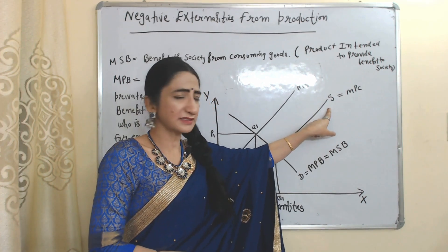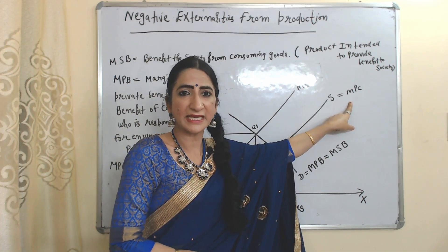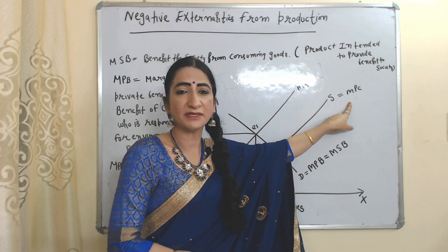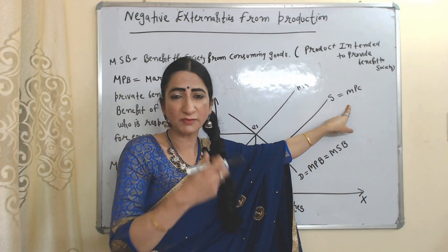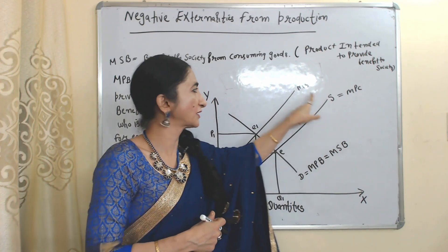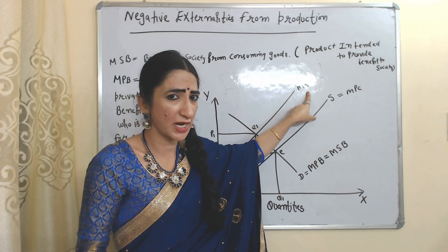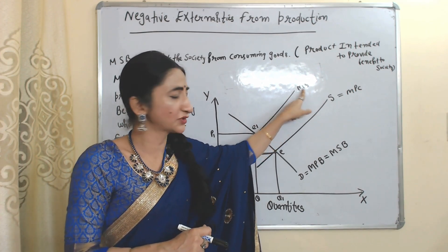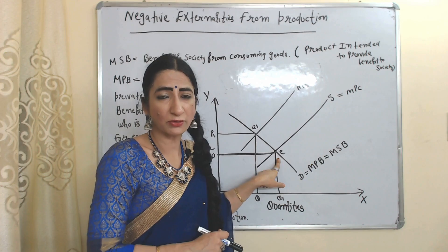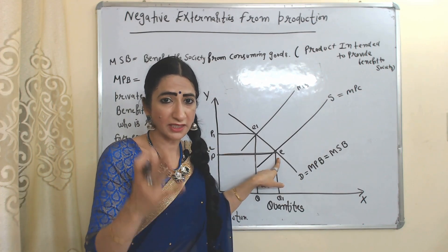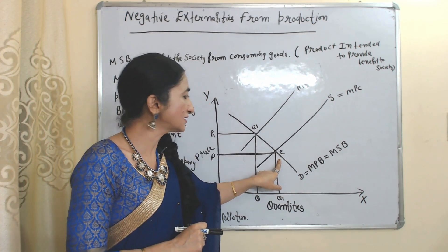S is the supply curve of the firm, which is equal to MPC. MPC means marginal private cost — the cost of the firm responsible for environmental pollution. MSC is marginal social cost — the cost to society due to environmental pollution. E is our initial equilibrium point, the free market equilibrium point without any government intervention.